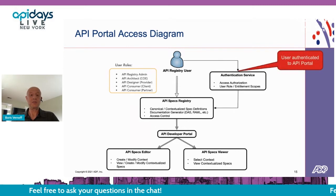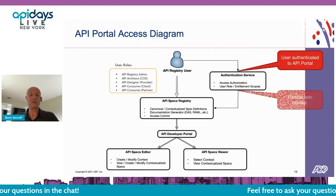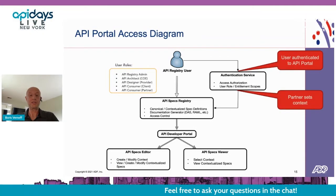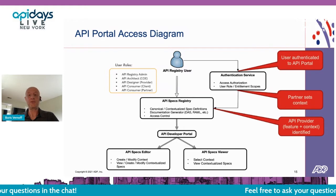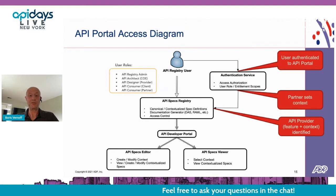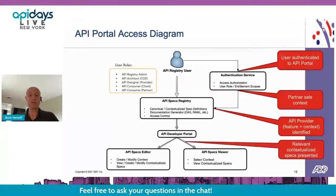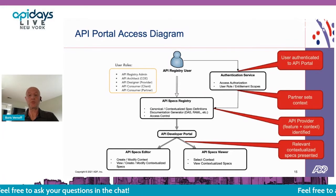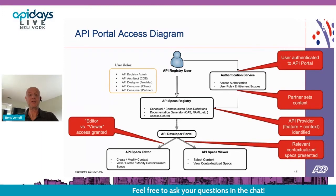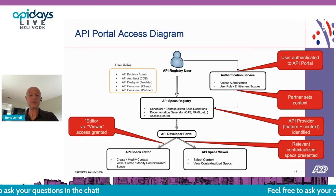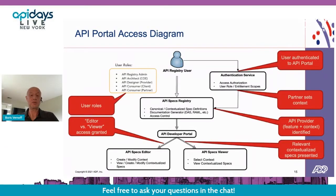Here's a high-level diagram demonstrating the API portal access flow. It starts with authenticating the user, and once authenticated, if partner access is detected, a choice of context is offered. Based on the selected feature and requested context, the API provider is identified by the API registry, and the user is directed to a customized API portal that also supports different access modes: editor versus viewer. Editor mode is typically on the provider side, and viewer is typically on the consumer side.